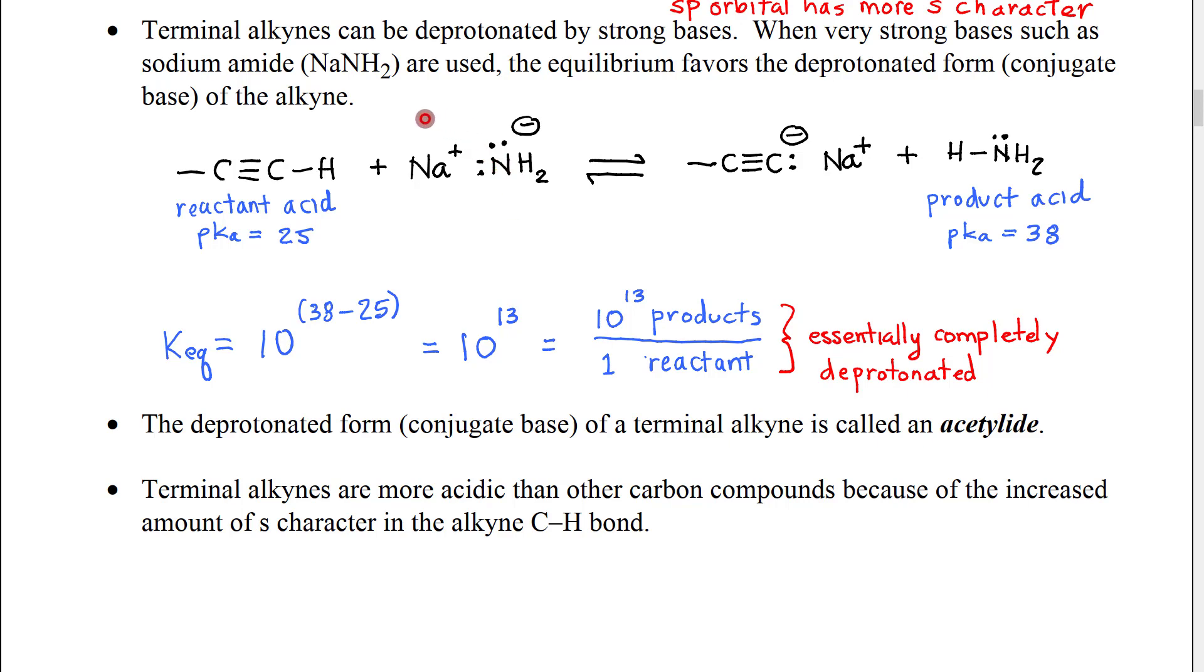and this amide ion would become the base. The amide ion would reach out, grab the hydrogen off of the alkyne, pair of electrons would go onto carbon, and we would be left with this negatively charged acetylide ion. The sodium ion would then become attracted to that,